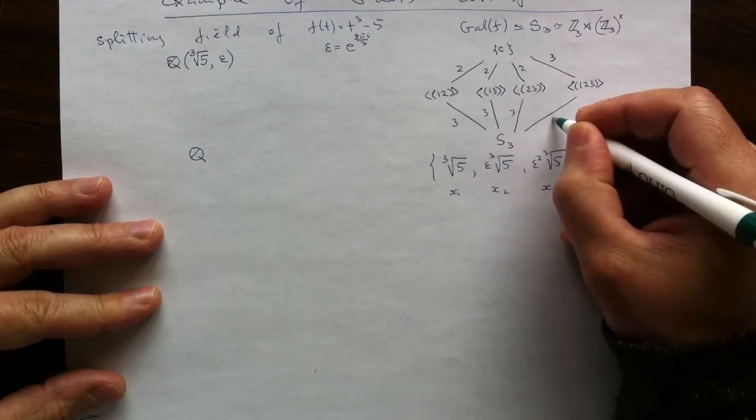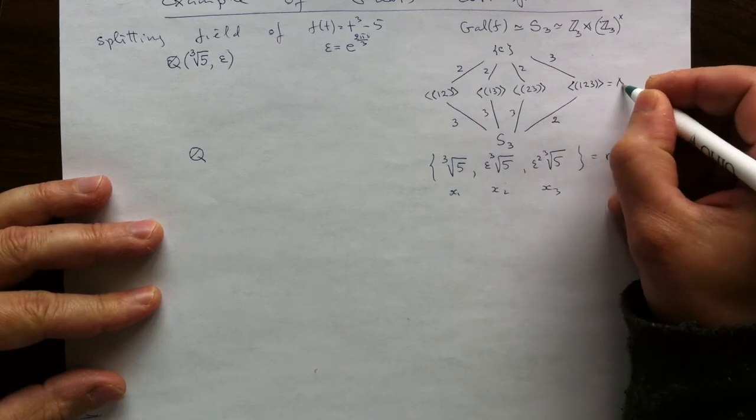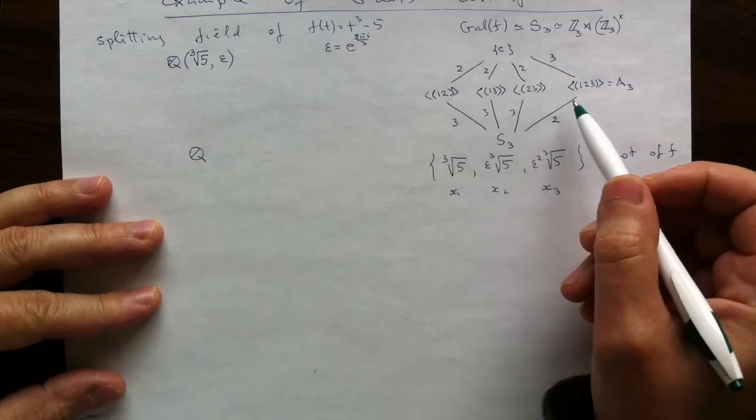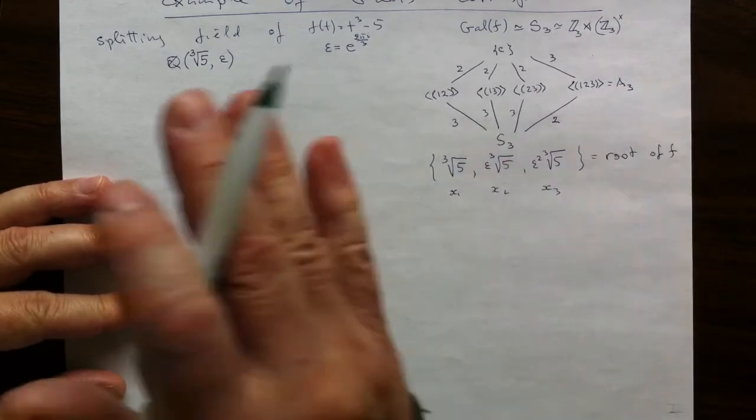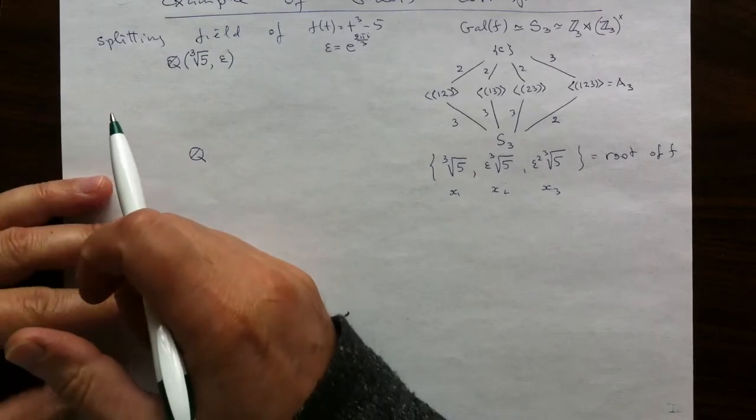So it will be of order 3, and it will be of index 2. Alternative name for that is A3. So that is the flipped lattice of subgroups of the group S3, of the group of symmetries. And then we can translate it into the lattice of subfields. And the translation is easy.